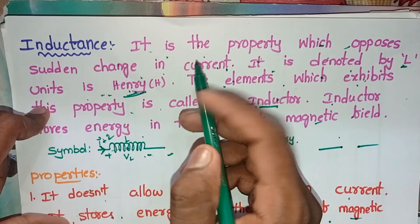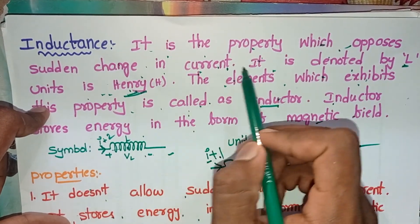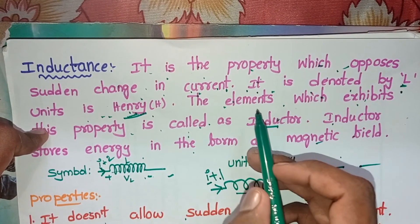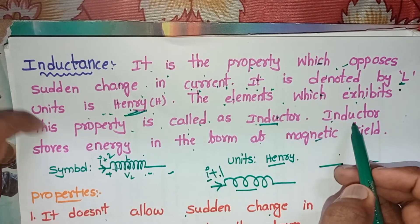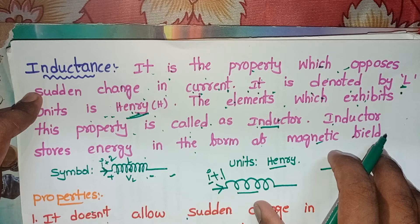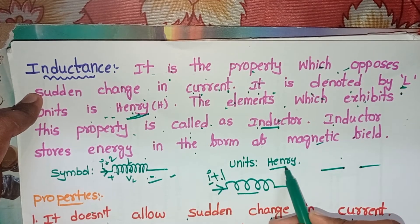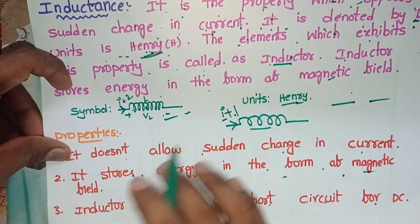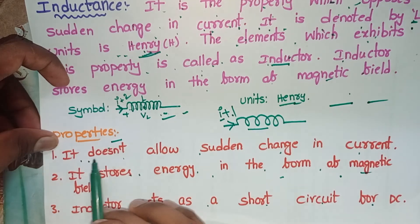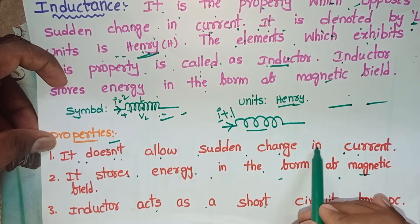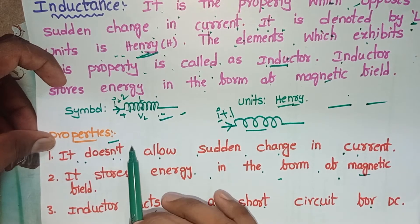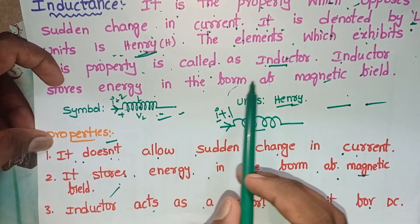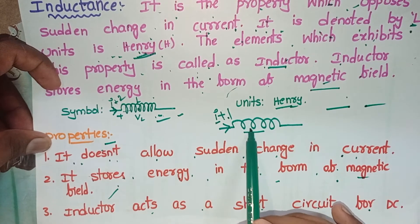Inductance is the property which opposes the sudden change in current, denoted by L with units of henrys. The element which exhibits this property is called an inductor. This is the symbol for the inductor. The first property is: it does not allow the sudden change in current. The second property is: it stores energy in the form of a magnetic field.